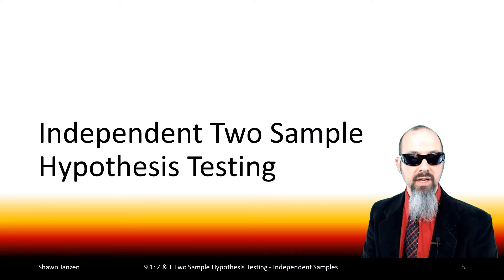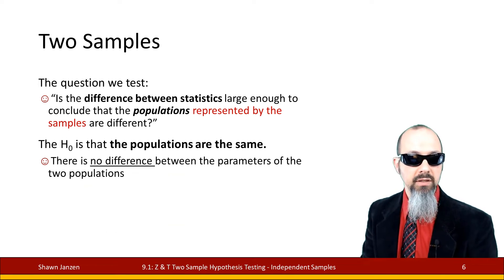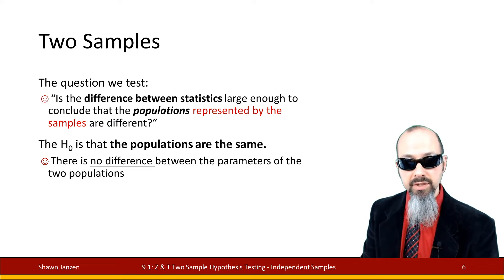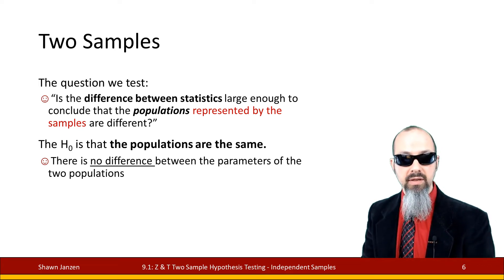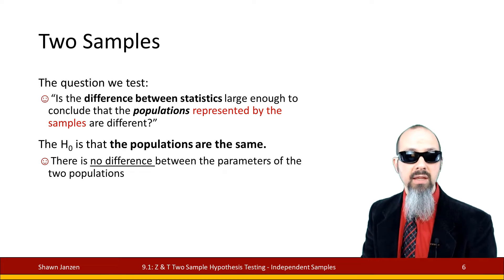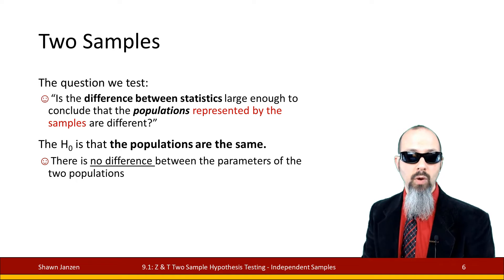We'll kick off with independent two-sample hypothesis testing. The question we're asking is: is the difference between the statistics large enough to conclude that the populations represented by the samples are different? I want to stress — populations, samples — these are plural. The null states that the populations are the same: the average between two different groups is the same, there's no difference at the population level, and we're using two sample groups, one representative of each population, to do our comparisons.